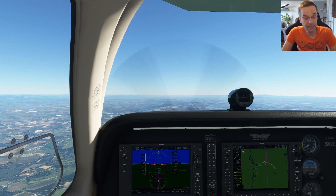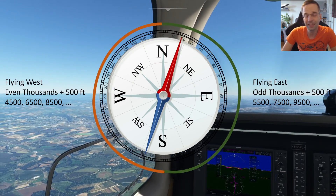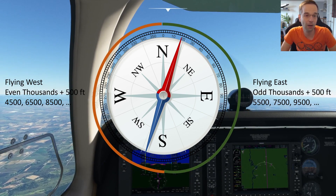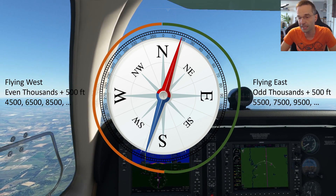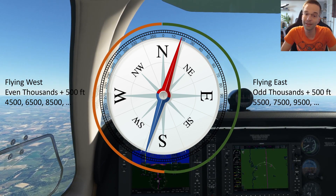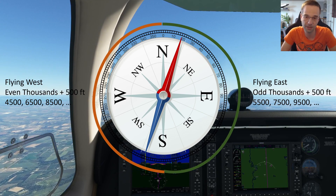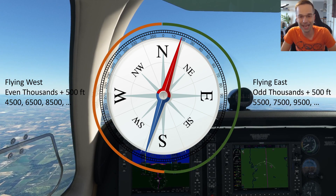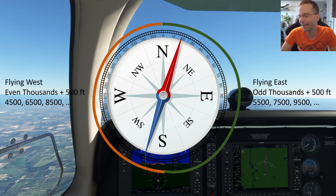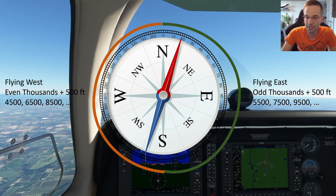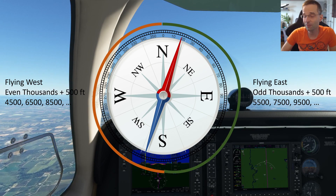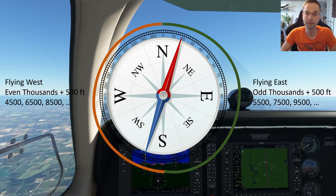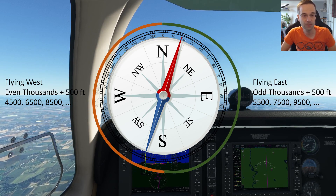The first criteria for picking a cruise altitude is that in large parts of the world, when you're flying east you should be flying at an odd thousand plus 500 feet, and when you're flying west you should be flying at an even thousand plus 500 feet. For example, flying from LA to Vegas I might cruise at 7,500 or 9,500 feet, but flying from Vegas back to LA I'd cruise at 6,500 or 8,500 feet.